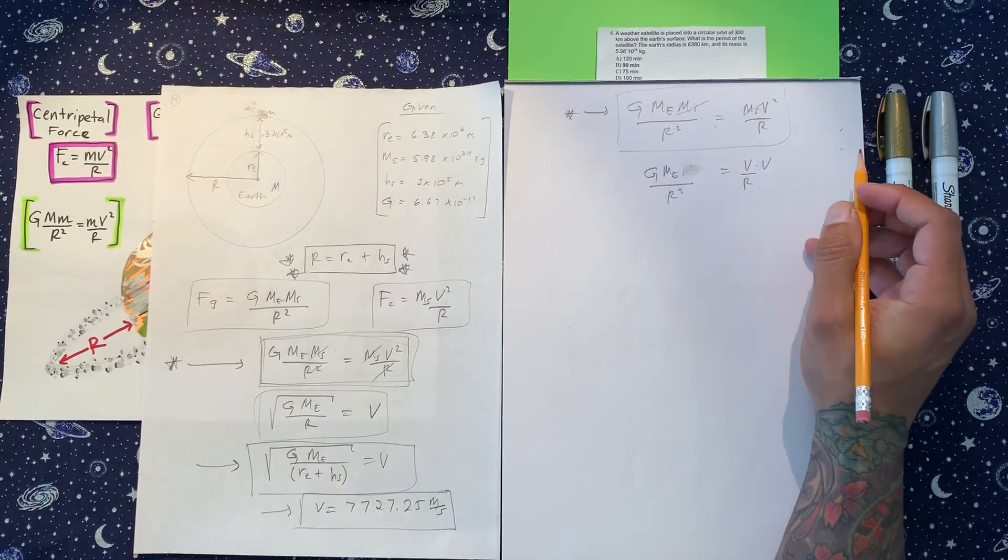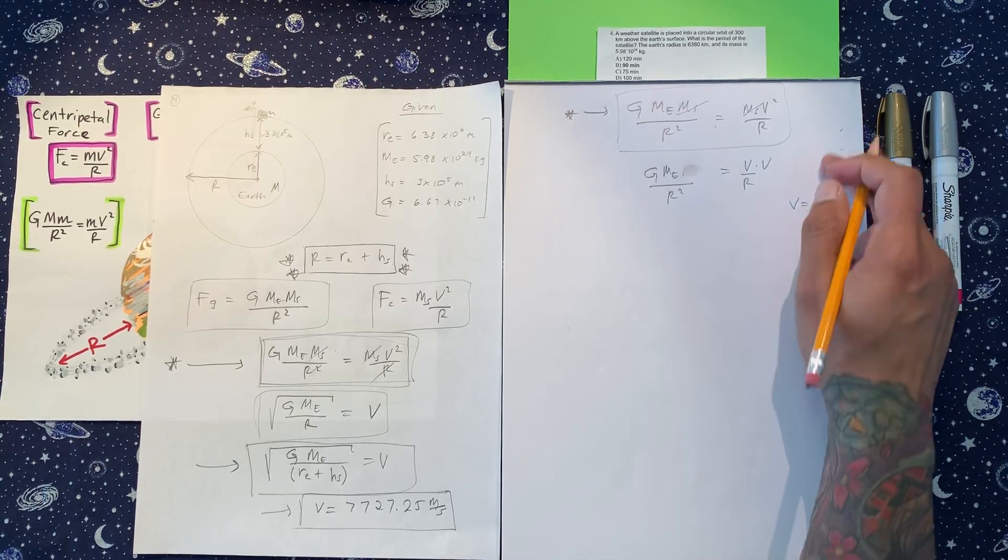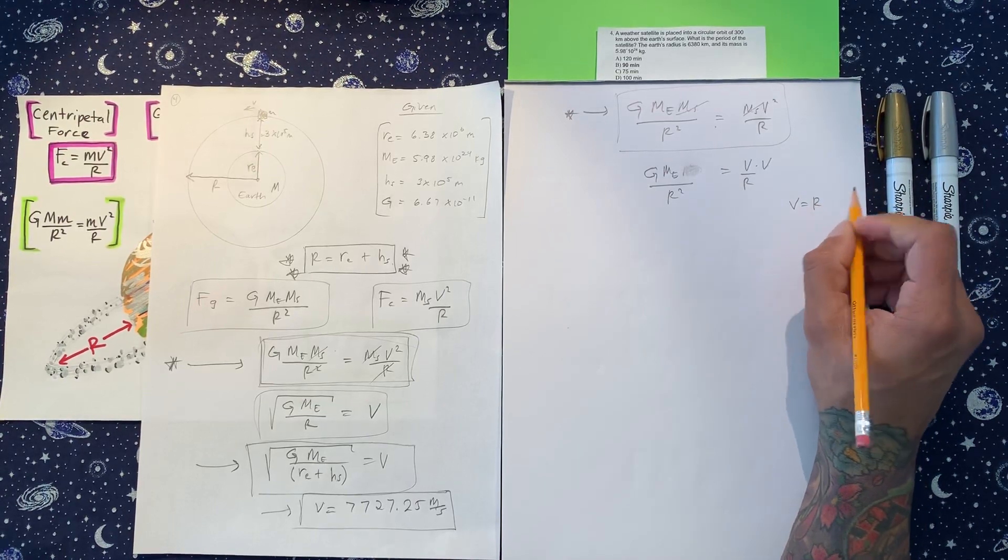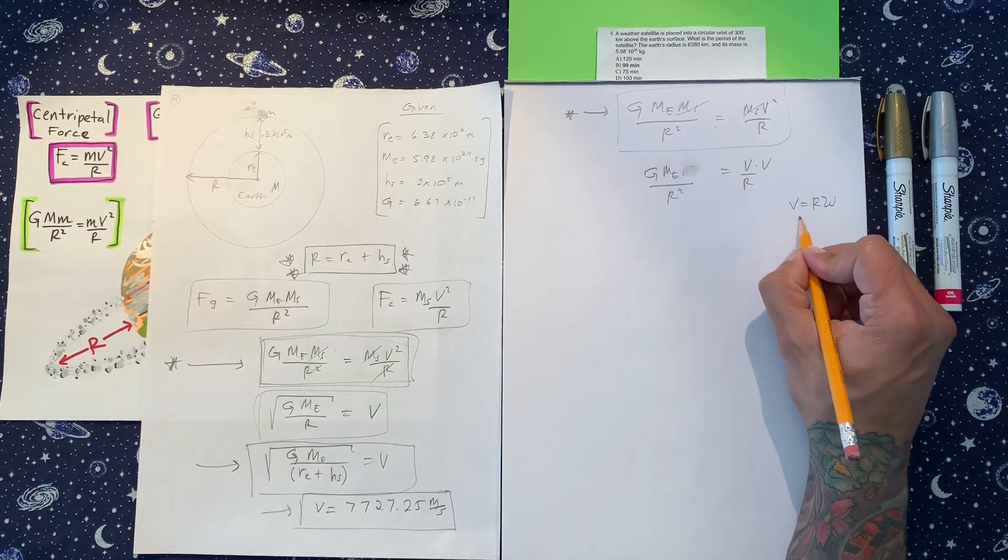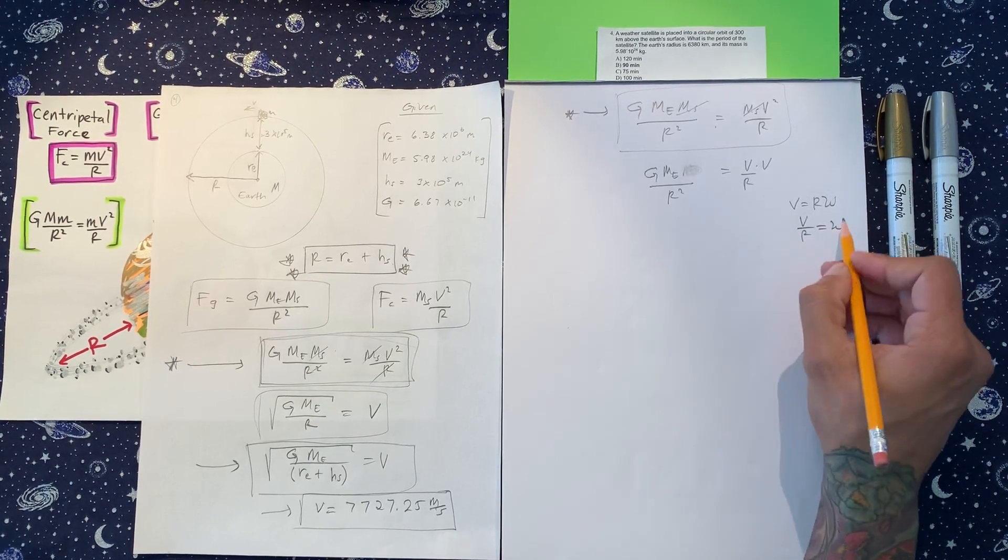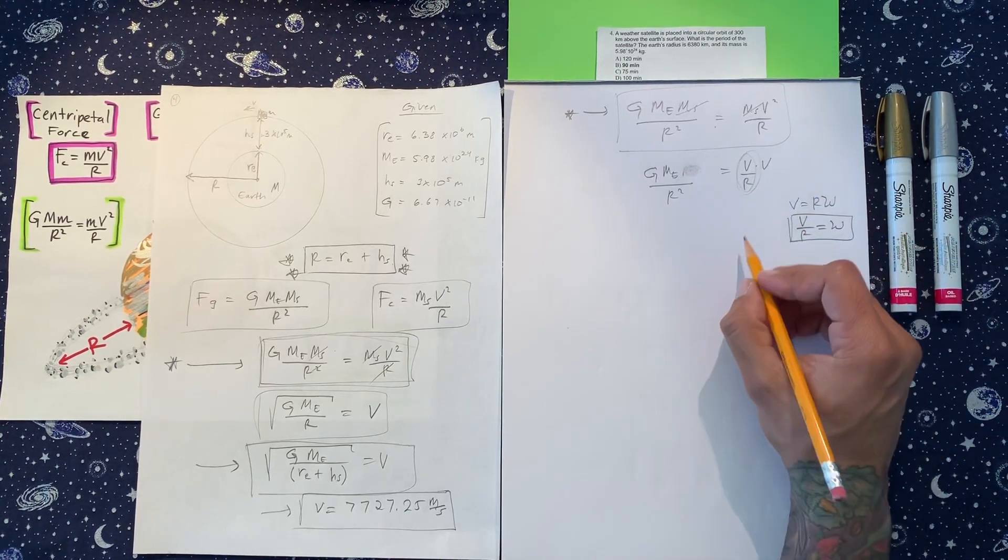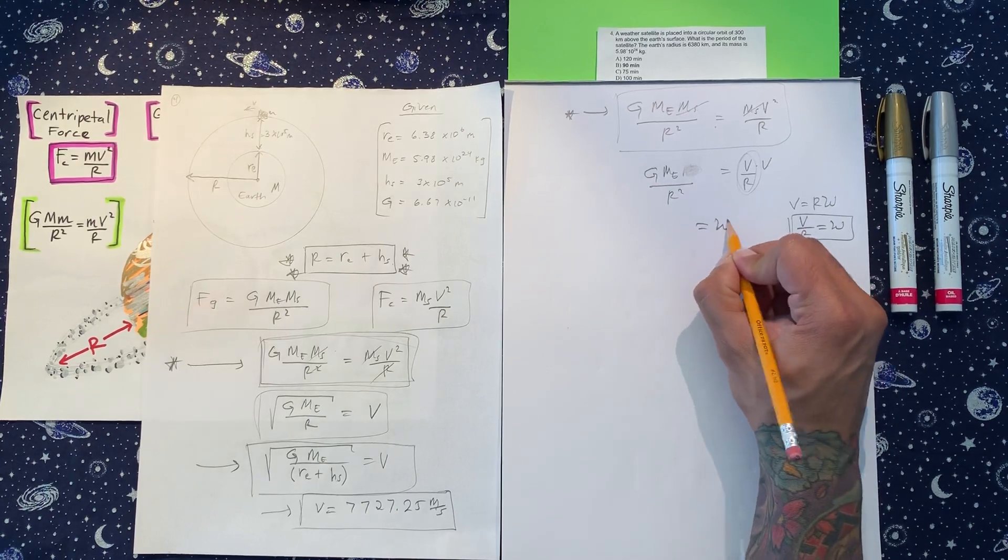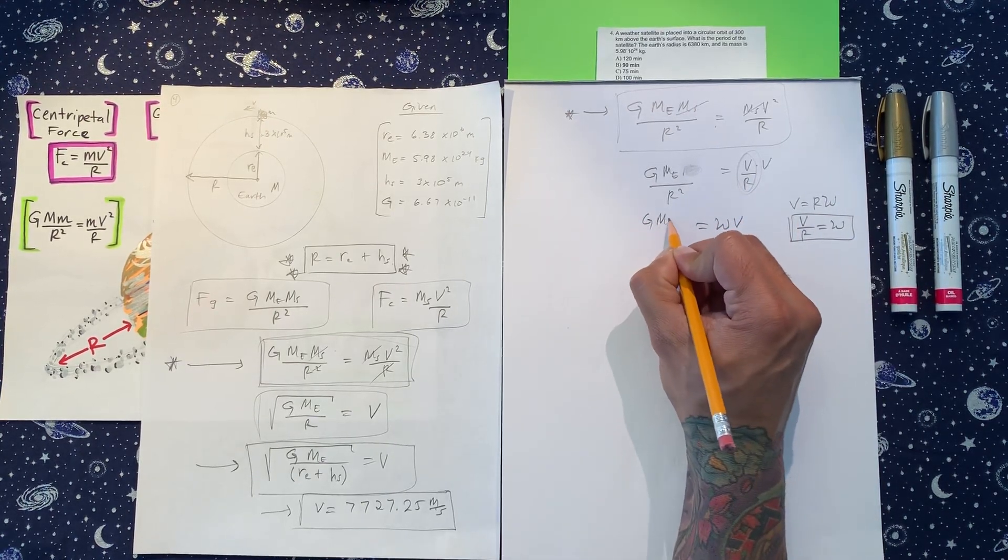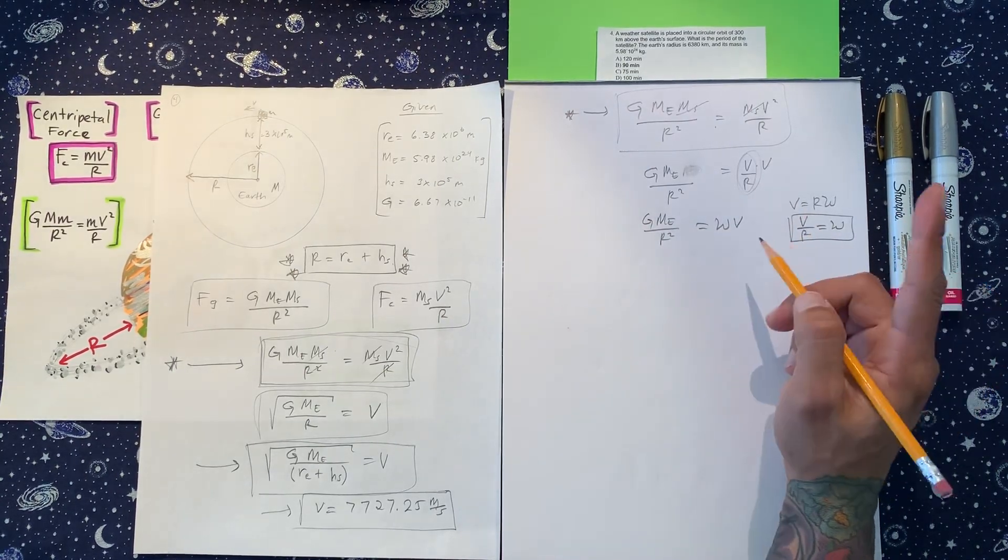Okay. So now from this part here, we need to know that velocity in circular motion is equal to r omega. Or we could just write v over r is angular velocity. Knowing that we're going to replace this. So we're going to get omega times velocity. Here we got the same stuff as above. And then one more change.